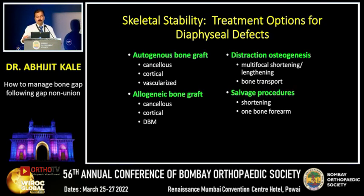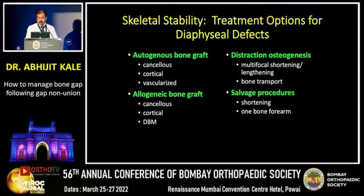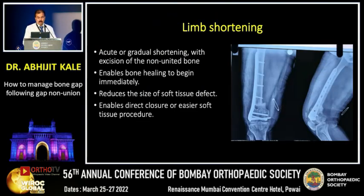A bone defect can be filled up either by using an autogenous bone graft, allogenic bone graft, or distraction osteogenesis, or by a salvage procedure like shortening or using the Masquelet technique as mentioned by my previous speaker.